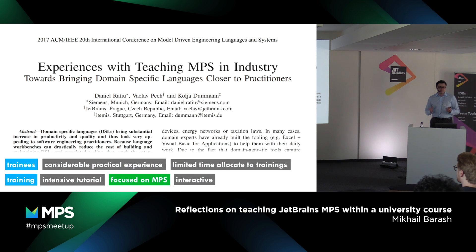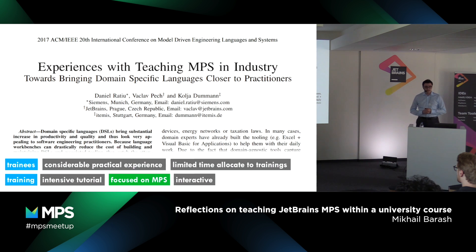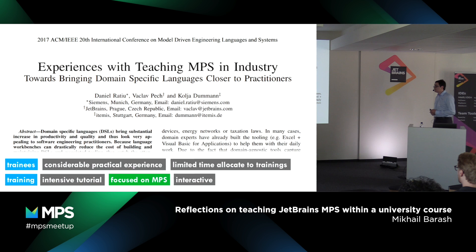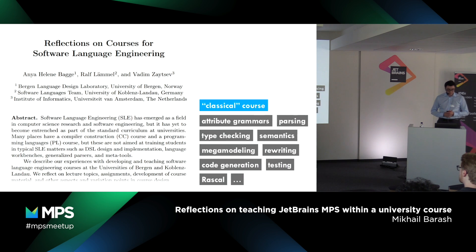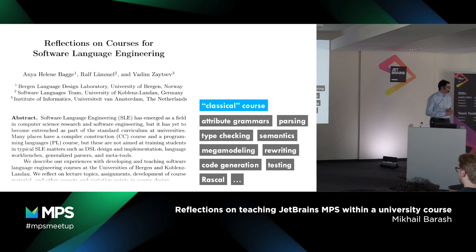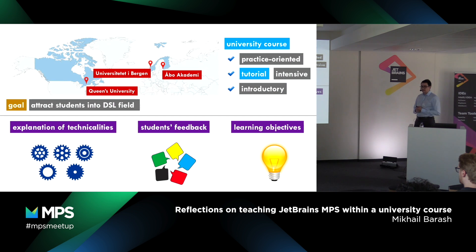I would like to put my course in the existing context. One reference is about teaching MPS in industry, where the trainings were quite intensive tutorials focused specifically on MPS, and the trainees had considerable practical experience. As you might guess, this is a setting that is different from a traditional university setting. Another reference is about a classical course on compilers or software language engineering, which would usually talk about attribute grammars and so on. In my course I wanted to combine these two approaches to have a university course that would still be tutorial-like.